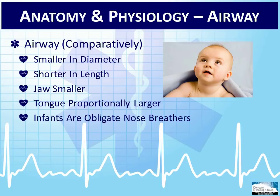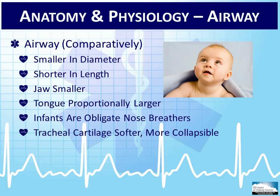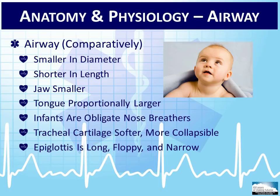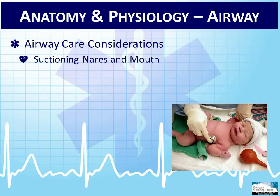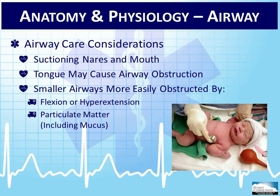Infants breathe through their mouths only when crying. Thus, it is extremely important to clear the nasal airway with a bulb syringe or appropriate size suction catheter. Tracheal cartilage is also softer and more collapsible in the small child, so correct airway manipulation to a neutral position is imperative. The child's epiglottis is long, floppy, and narrow compared to the adult patient, which can make it more of an obstruction when positioning the airway, especially if it is swollen. Airway care includes suctioning both the nares and the mouth. In the very small infant, suction the mouth first, then the nose, because suctioning the nares first stimulates breathing and can cause any material in the mouth to be inhaled. Smaller airways are more easily obstructed by flexion, hyperextension, particulate matter including mucus and fluids, and soft tissue swelling.